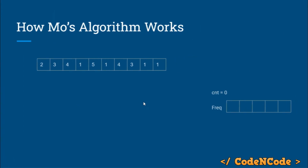We have already discussed how Mo's works. So let's suppose this is our currently active range. In this range, this is the frequency array and this is the number of unique elements in the current range. The current active range is 3 to 6, and the unique elements are 1, 4, and 5. Frequency of 1 is 2, frequency of 4 is 1, frequency of 5 is 1. Since there are three non-zero frequencies, there are three unique elements present in the active range.